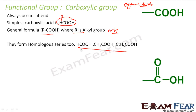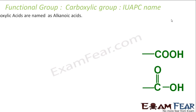Carboxylic acids also form a homologous series: HCOOH, CH3COOH, C2H5COOH — they all have similar properties. The COOH group is structured as: carbon attached to one oxygen with a double bond, and attached to an OH group with a single bond. So you can write it as COOH.